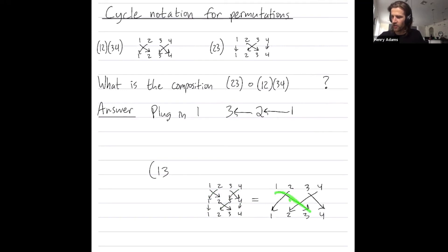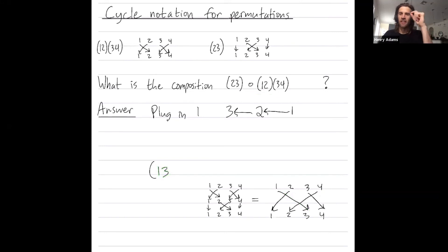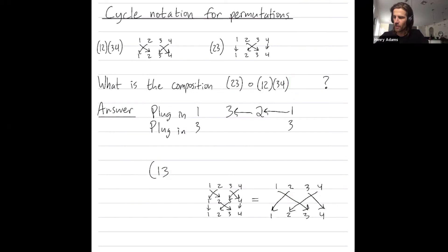One is going to three in the final composition, and in cycle notation that's why I write three next — it tells me where one is going. Now the number that goes next is where three gets mapped. I plug in three: this first transposition sends three to four, and the remaining transpositions don't change four. So three gets sent to four.